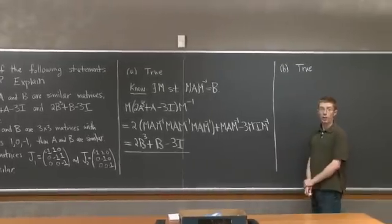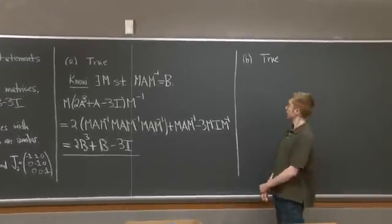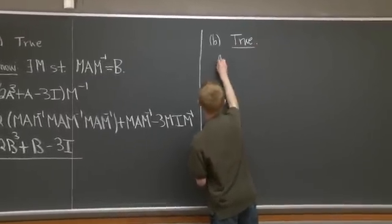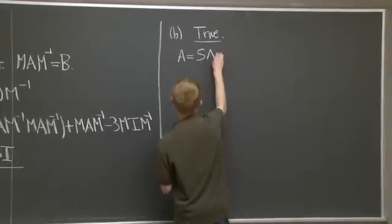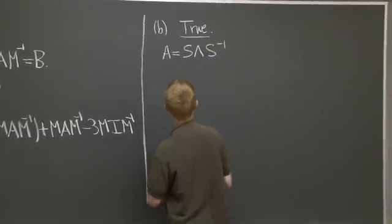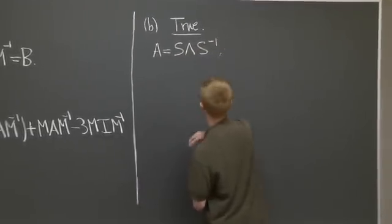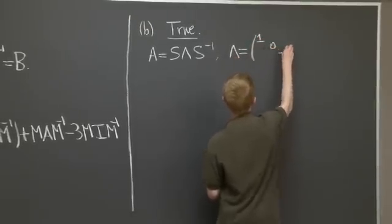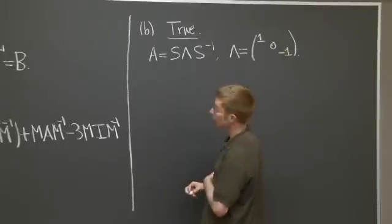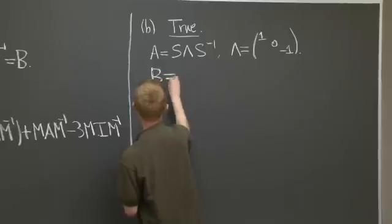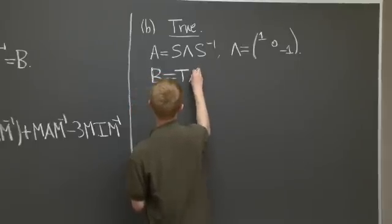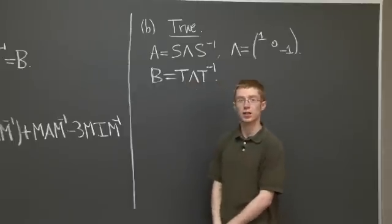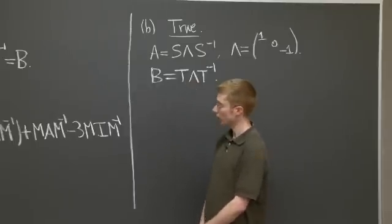Well, a matrix with distinct eigenvalues is diagonalizable. So we can write A as S lambda S inverse, where lambda is just this eigenvalue matrix. We can also write B as T lambda T inverse, where lambda is the same in both cases because they have the same eigenvalues.